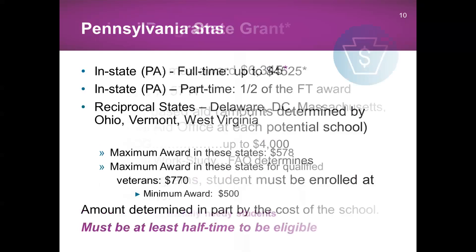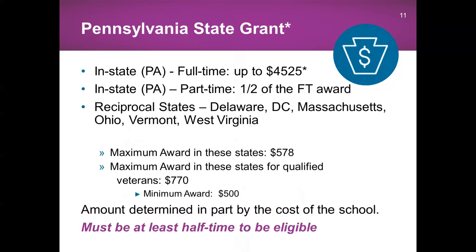Within Pennsylvania, we have a state grant program administered by FIA. The full-time award amount is $4,525 this year, and there is also a half-time award you could be eligible for. We have a few reciprocal states where you can take some of your state grant funding if you are awarded a grant through the Pennsylvania State Grant Program. Those states are Delaware, Washington D.C., Massachusetts, Ohio, Vermont, and West Virginia. You must be at least half-time to be eligible for the state aid program.